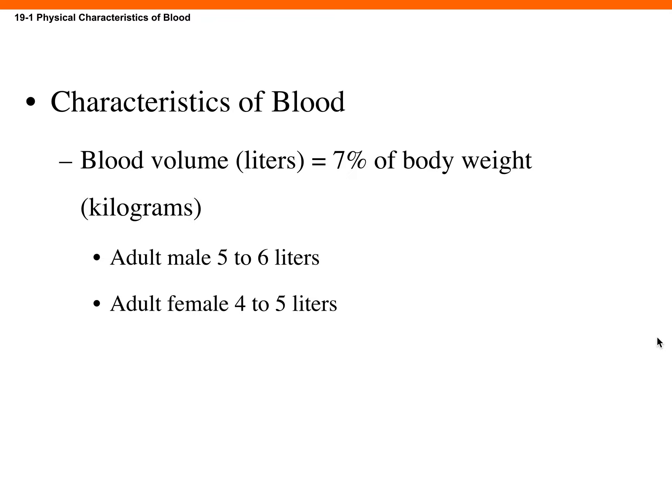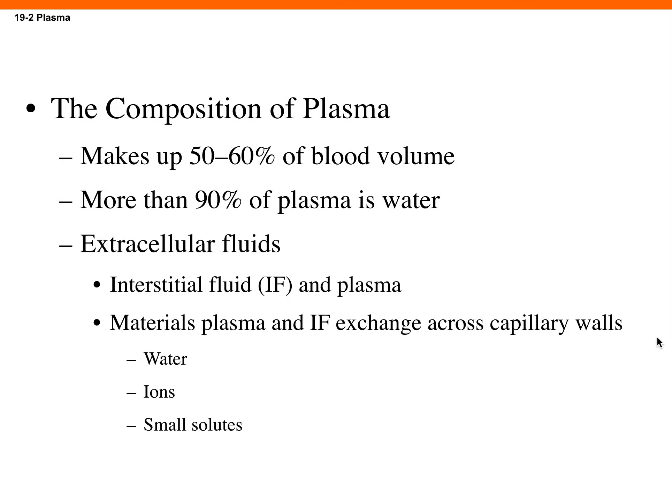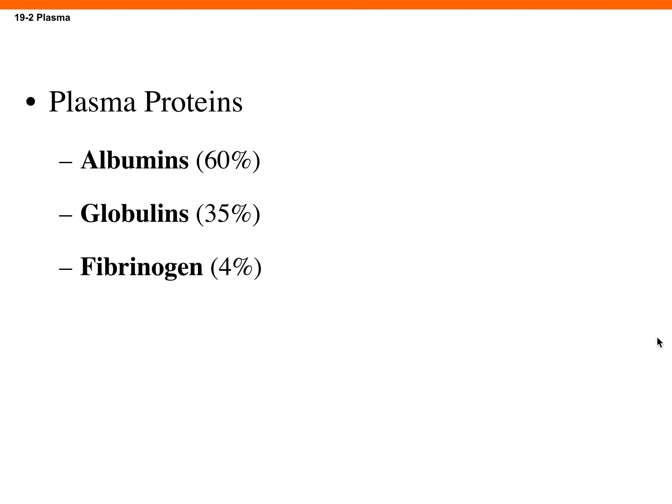Characteristics of blood: about five liters circulate in the average person. For plasma proteins, the most important one to memorize is albumin. Albumin holds fluid inside of the blood vessel. If you can't make albumin — say you don't eat enough protein — you can't hold fluid inside the vessel and it leaks out into the tissue, causing swelling, also known as edema.